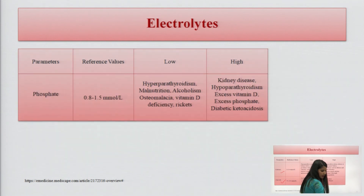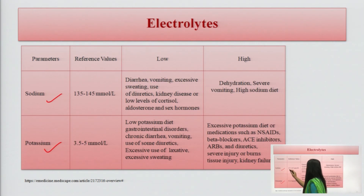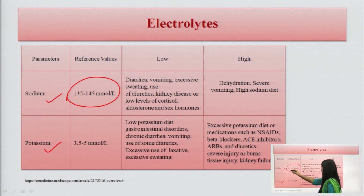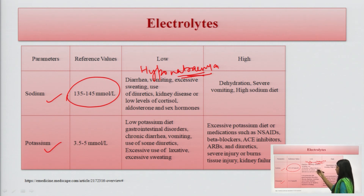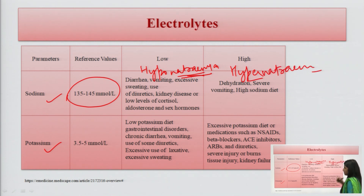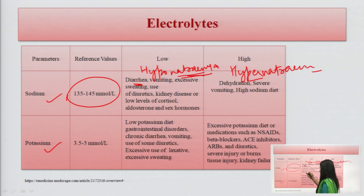These five ions are covered in electrolyte testing. The sodium reference value is 135 to 145 millimoles per liter. If the value is decreased below this reference value, we call it hyponatremia. If the value is higher than this reference value, we call it hypernatremia. If sodium levels in the blood are low, the situation is hyponatremia.